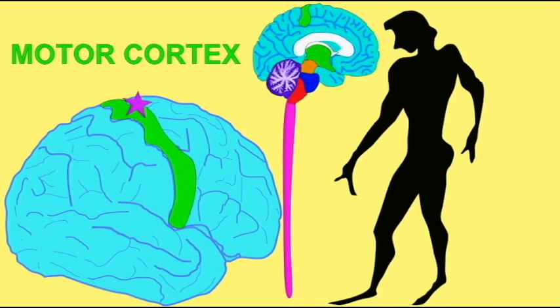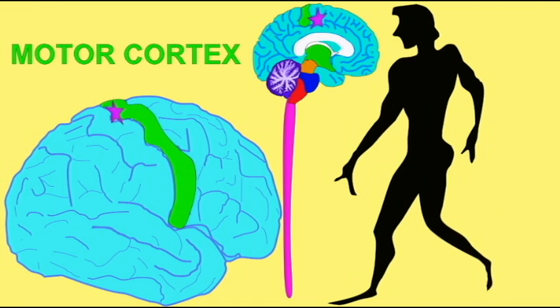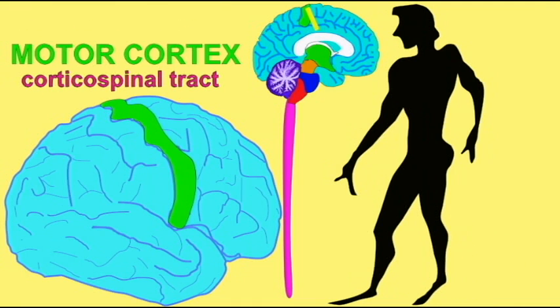It is known as the motor cortex because it is here that the voluntary skeletal muscle movements are planned. Activity in the facial area leads to voluntary movement of facial muscles. The activity in the hand area leads to voluntary movement of hand muscles. Activity in the foot area leads to voluntary movement of foot muscles.